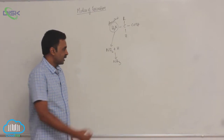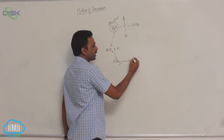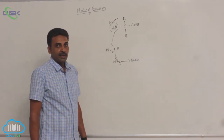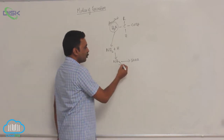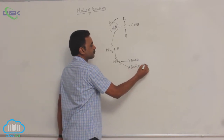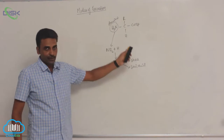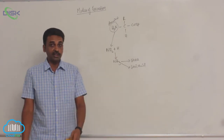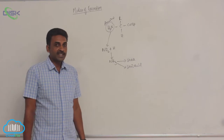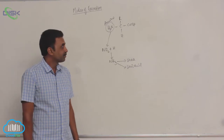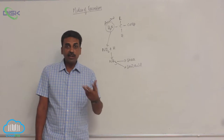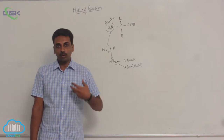So the extra proteins, extra nitrogen, or extra amino acids are converted into ammonia. In some animals, the ammonia is converted into urea. In some animals, the ammonia is converted into uric acid — first converted into urea and later into uric acid. Nitrogen is a vital element for our survival.